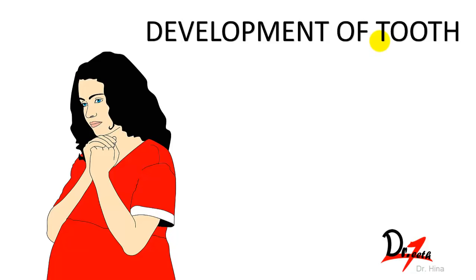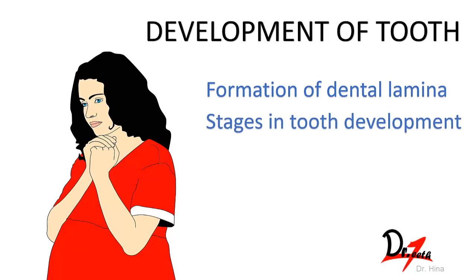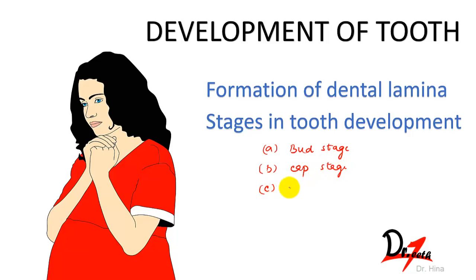Today we are going to study the development of the tooth, and we will study this in two phases. First is the formation of the dental lamina, and then we have the stages of tooth development: the bud stage, the cap stage, and then the bell stage — which has two sub-stages: the early bell stage and the late bell stage.